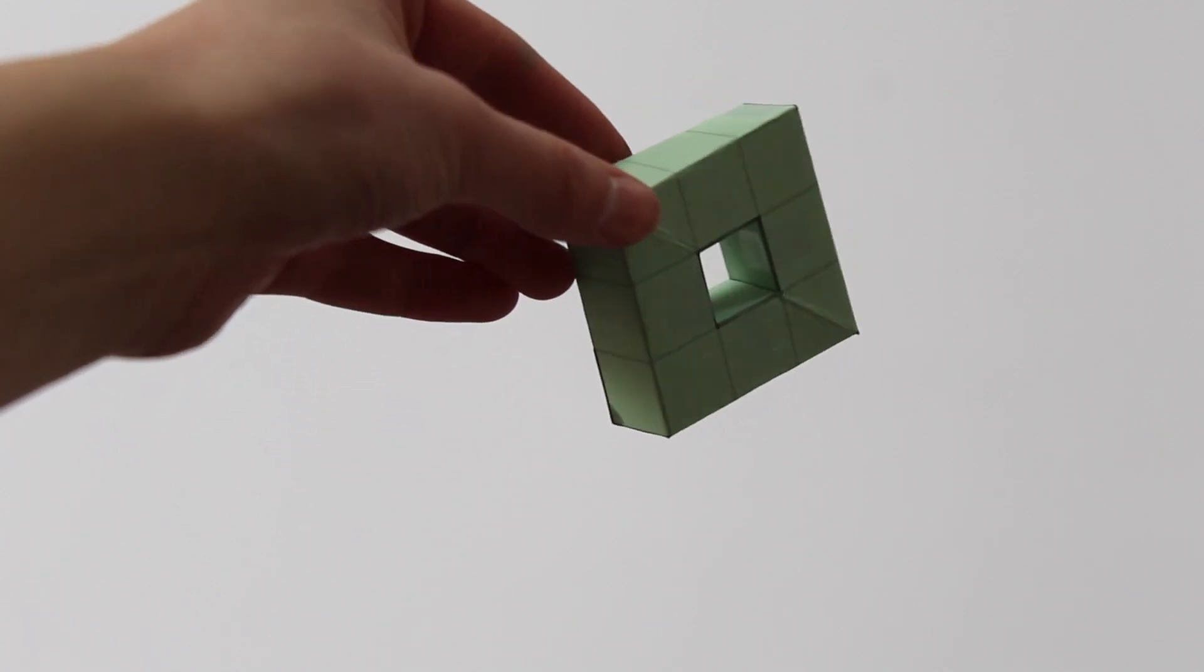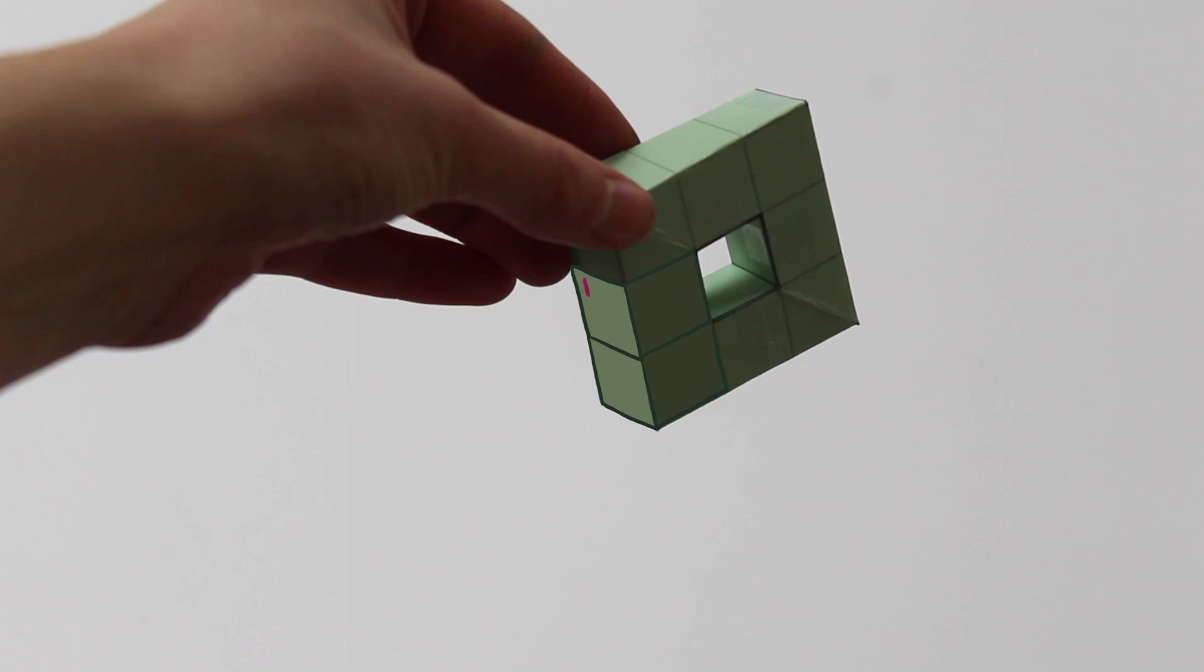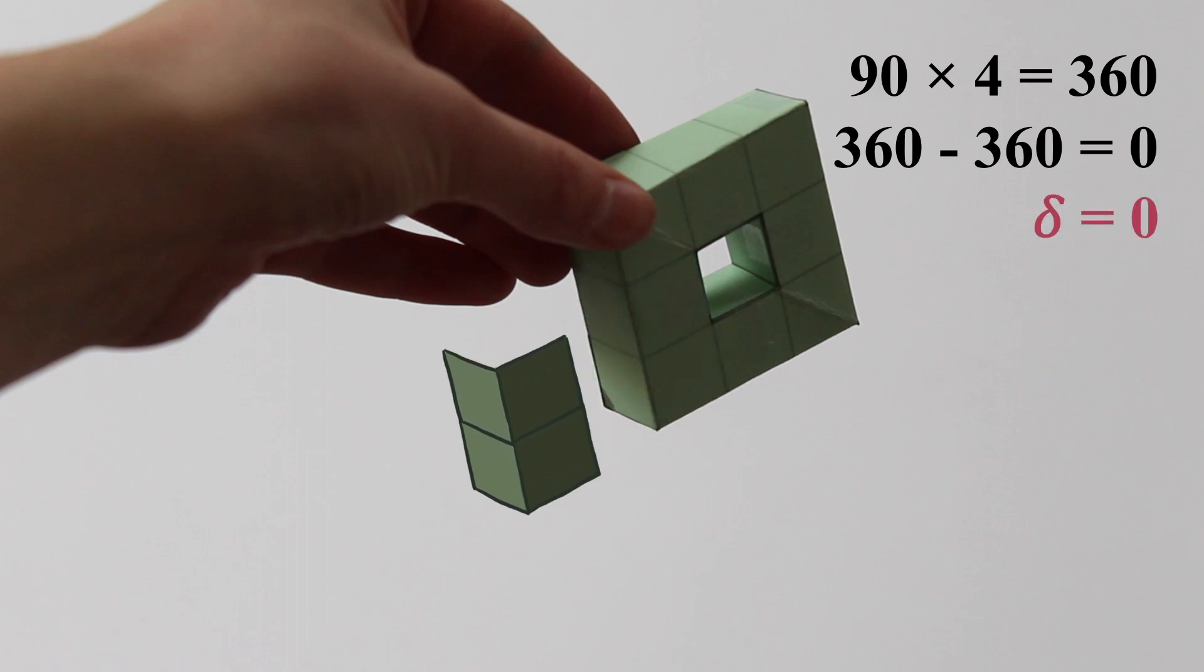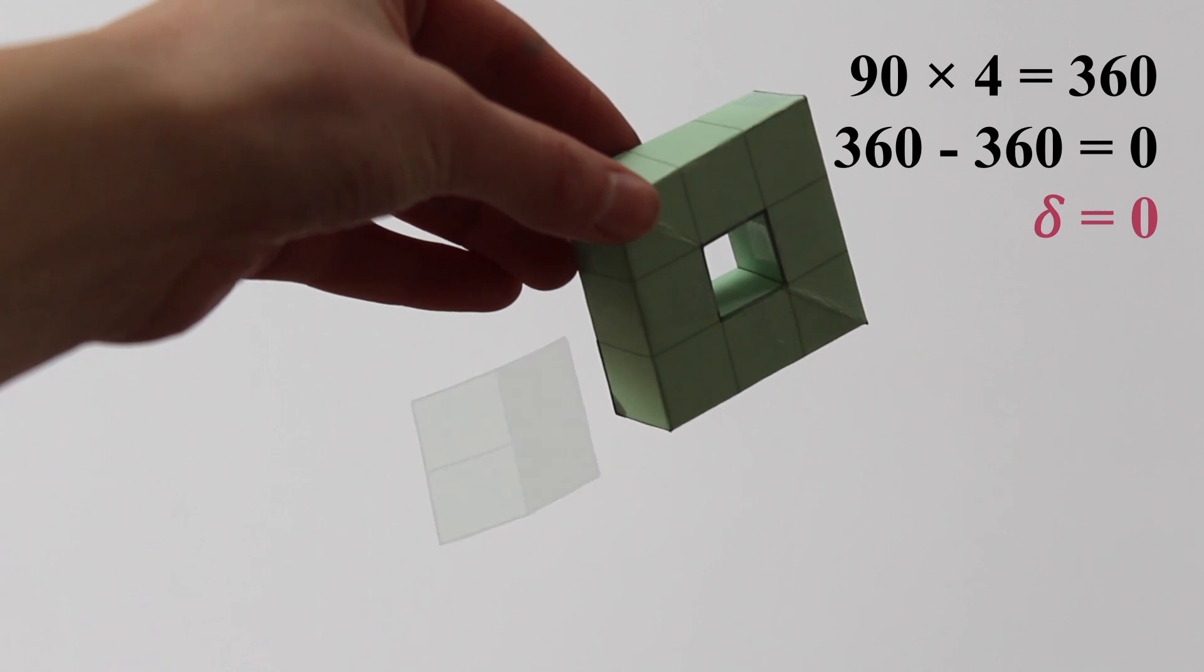The vertices on the edges of this surface have four squares meeting around them. So around each of these vertices, there is an angle of 90 times 4 equals 360 degrees. And 360 minus 360 is zero. So each of these vertices have an angle deficiency of zero. Notice that we could unfold at any of the edge vertices, and the surface would lay flat, showing that the angle deficiency is zero.